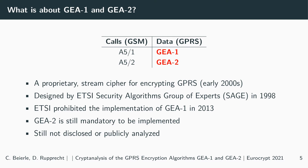While A51 and A52 have been analyzed, we know little about the security of GEA1 and GEA2. Both algorithms are stream ciphers designed by the ETSI in 1998 and are responsible for encrypting the data transmissions of GPRS. It is interesting that the ETSI forbids the implementation of GEA1 since 2013. This fact might be related to a presentation by Noel et al. GEA2 is still mandatory to implement, yet both algorithms were not publicly analyzed on their security claims.